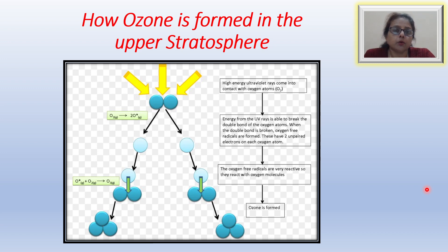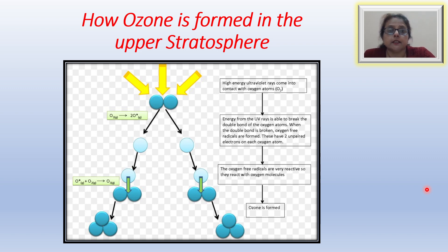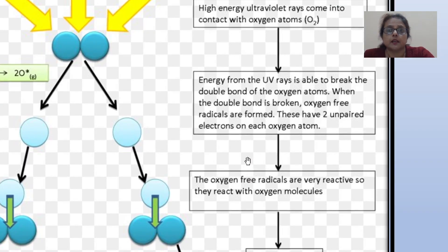Ozone is formed in the stratosphere in a very significant manner. Ozone is a form of oxygen with three atoms instead of two. It is formed when the ultraviolet rays of the sun split the oxygen atom.